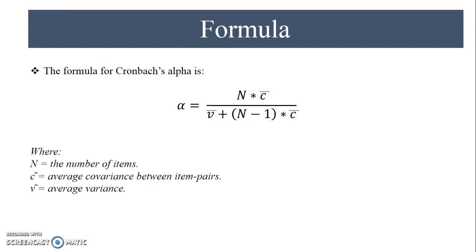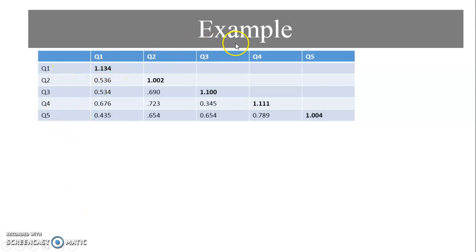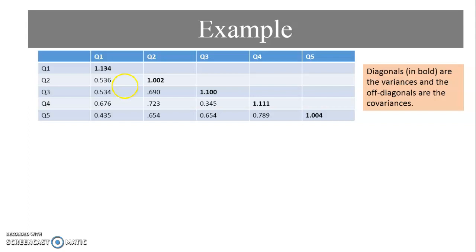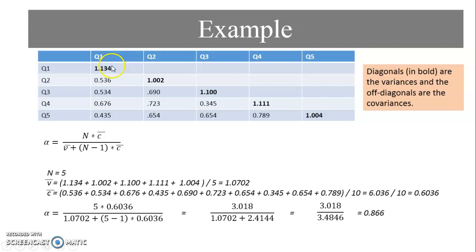The formula for Cronbach's alpha is: α = (n × c̄) / (v̄ + (n−1) × c̄), where n is the number of items, c̄ is the average covariance between item pairs, and v̄ is the average variance. For example, with a covariance matrix of five items, the diagonal values represent variances and the off-diagonal values represent covariances. You compute v̄ by averaging the five variances, and c̄ by averaging the ten covariance values, then substitute both into the formula to get a value such as 0.866.